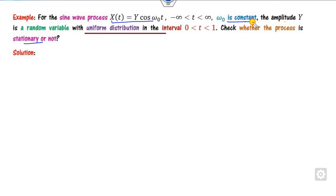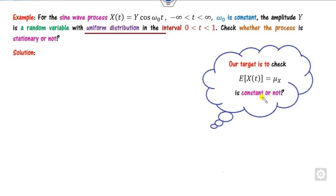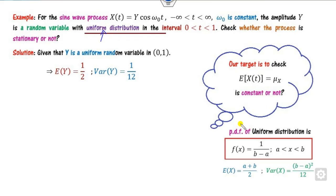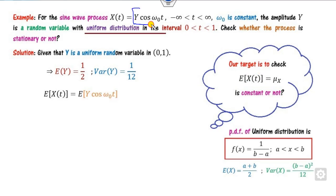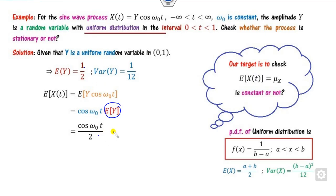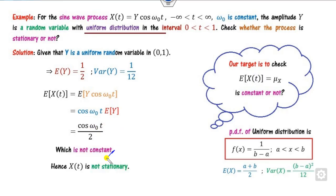Next, check whether the process X(t) = Y·cos(ω₀t) is stationary, where ω₀ is a constant and Y is a random variable with uniform distribution on [0, 1]. The PDF of uniform distribution is 1/(b−a) = 1/1 = 1. The mean is (a+b)/2 = 1/2. Computing E[X(t)]: since ω₀ and t are constants they can be taken outside, giving cos(ω₀t)·E[Y] = (1/2)cos(ω₀t). For different values of t this takes different values — it is not constant. Therefore this process is NOT stationary.